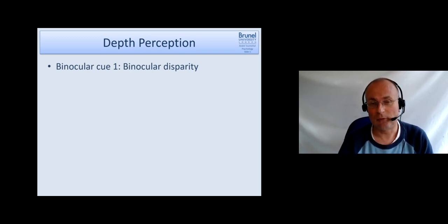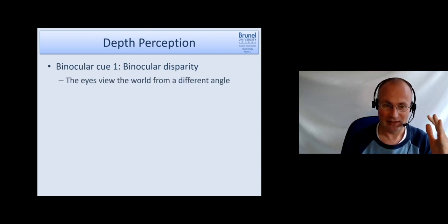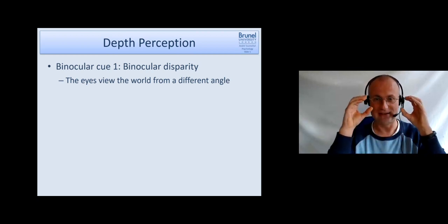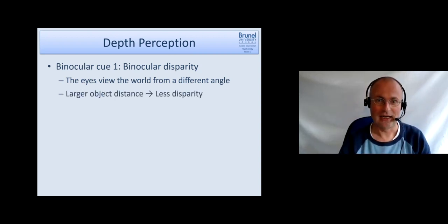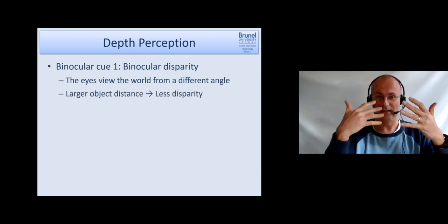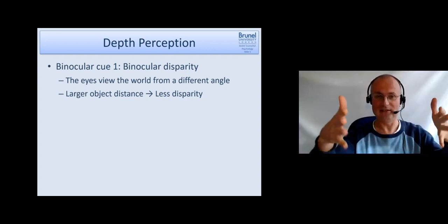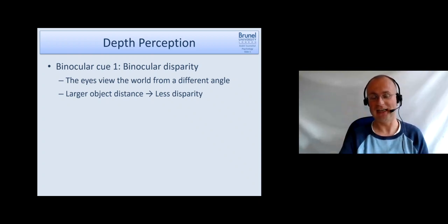The first cue I would like to discuss is binocular disparity. What does that mean? It means that because our two eyes are not at the same point but slightly different spatially, they view the world from a slightly different angle. When objects are more distant, this angle results in something called disparity.